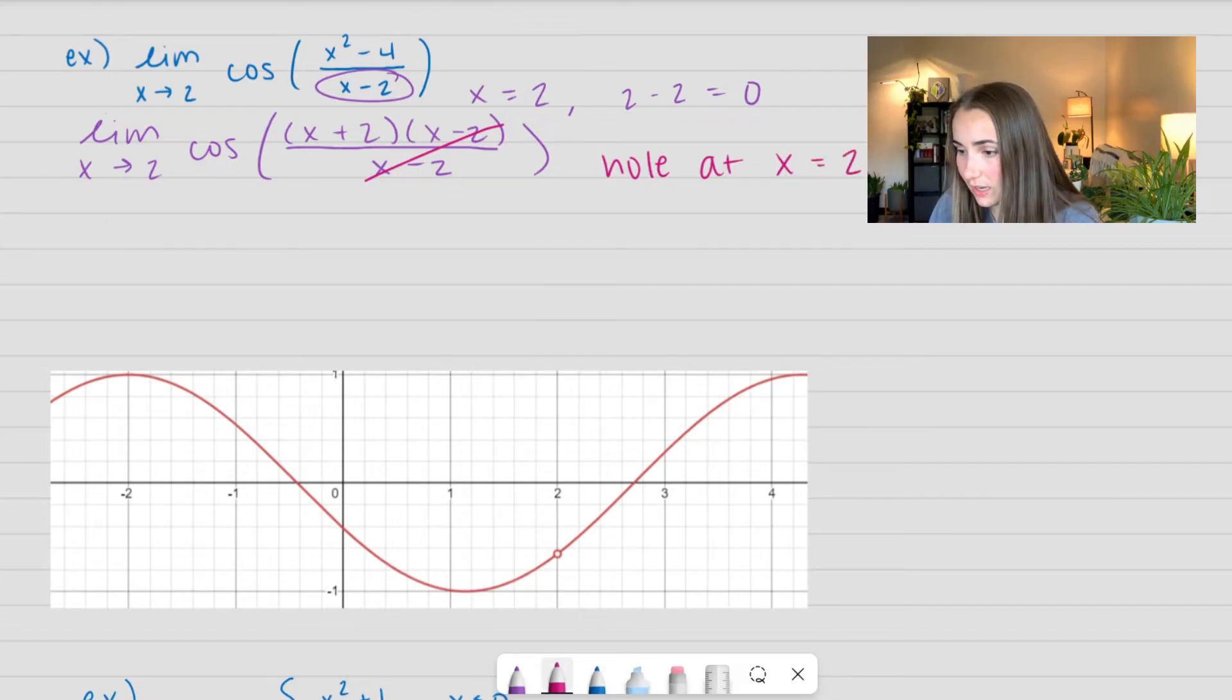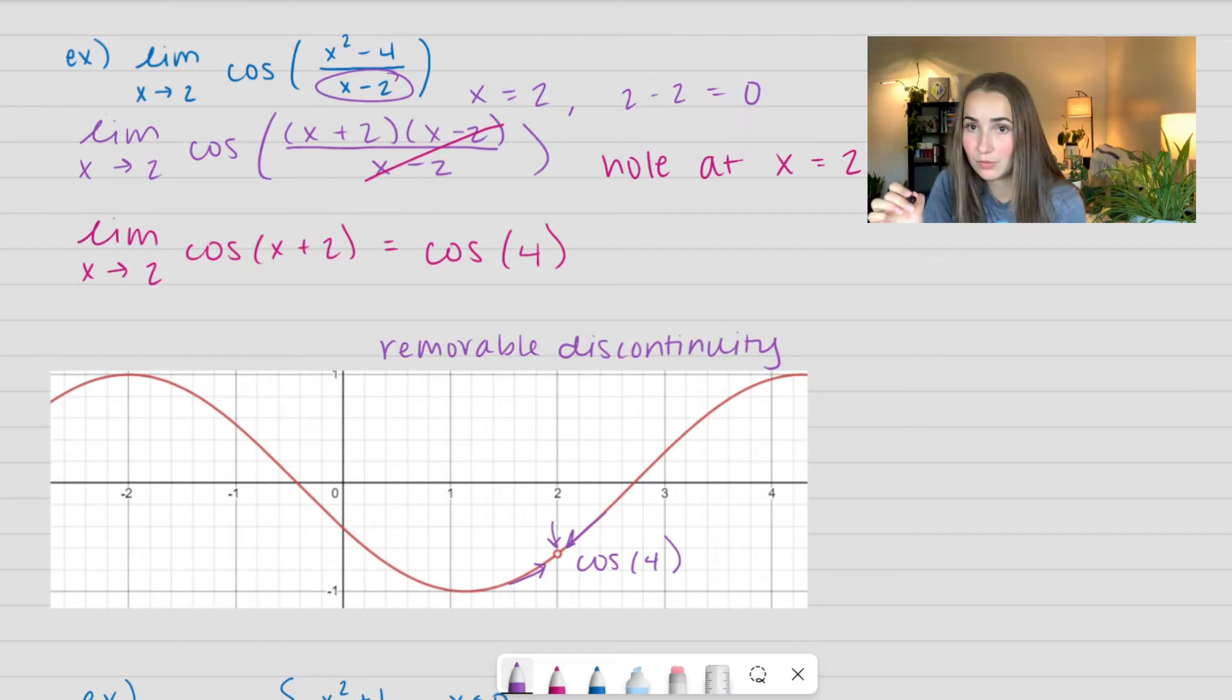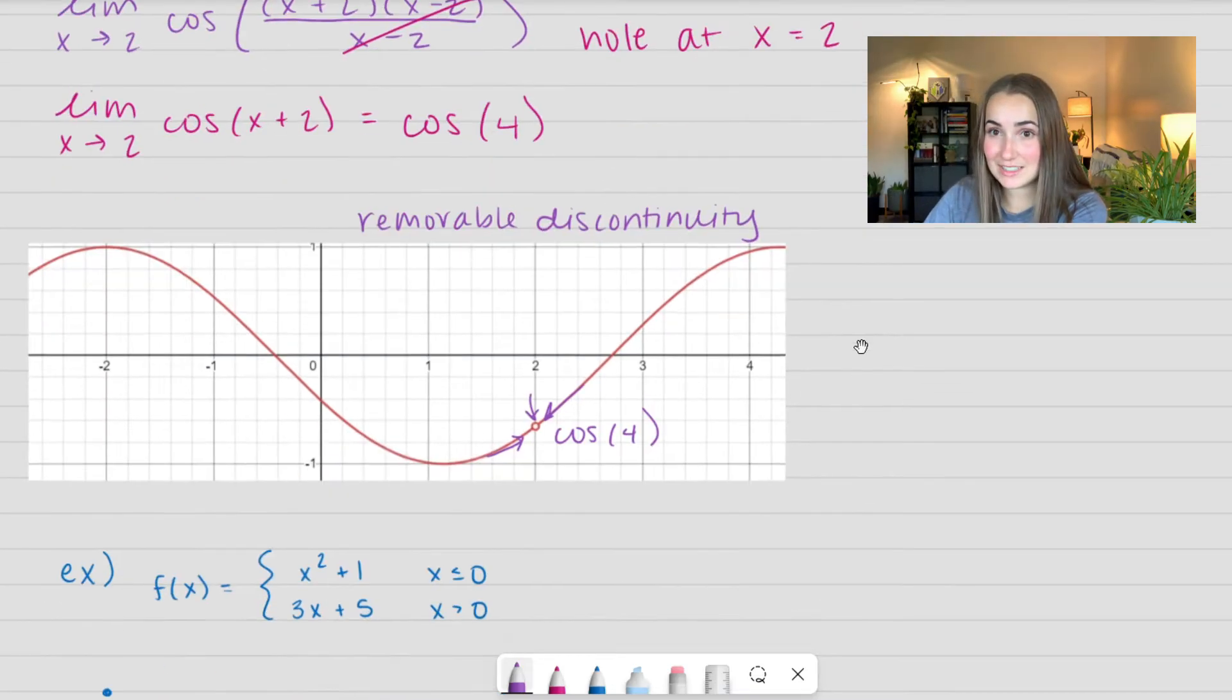Now let's go ahead and evaluate the limit. So now we have the limit as x approaches 2. I'm just going to go ahead and use direct substitution on this. When I plug it in, I end up getting cosine of 2 plus 2, which is equal to 4. And so here we have the limit as x approaches 2 is going to approach this value. But actually we're going to have a hole there because our actual function is not defined at 2. So this is called a removable discontinuity. It's where we have a hole in our function and you just got to pick up your pen and move it.